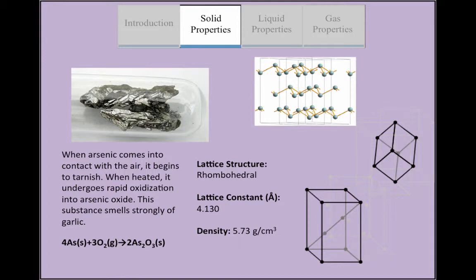Because of weak bonding between the layers, gray arsenic is brittle and has a relatively low Mohs hardness of 3.5. This forms a distorted octahedral complex with each other, resulting in a high density.